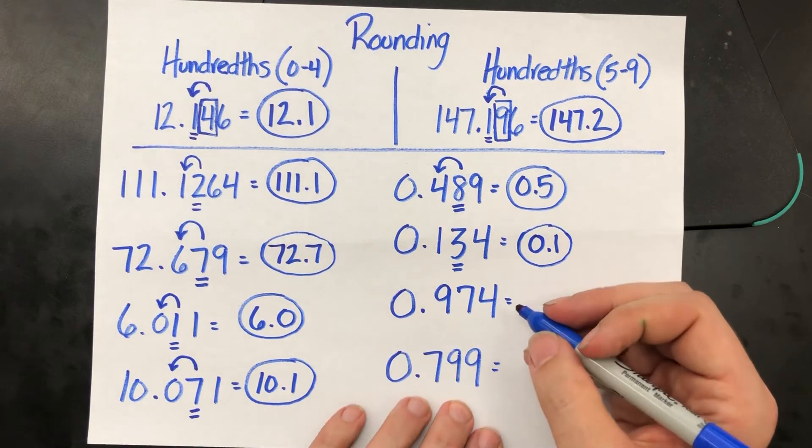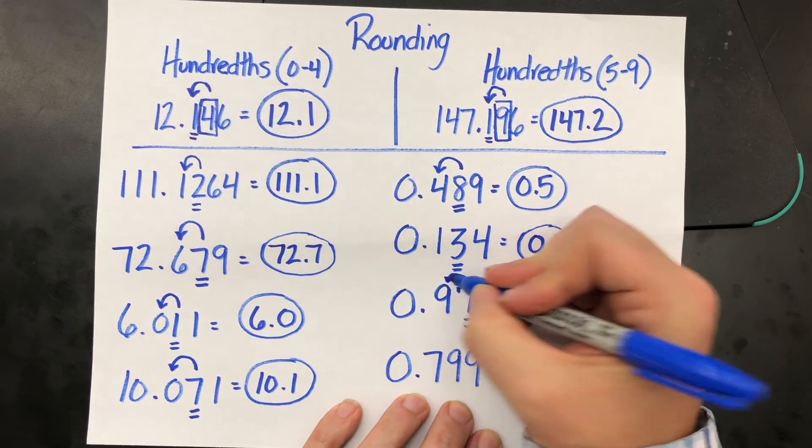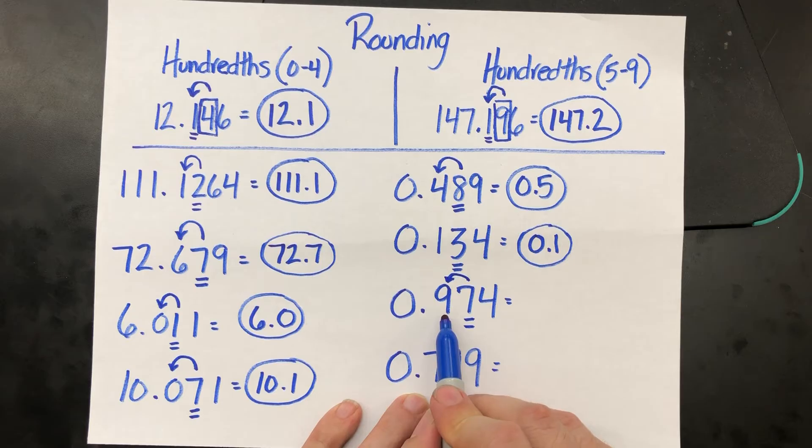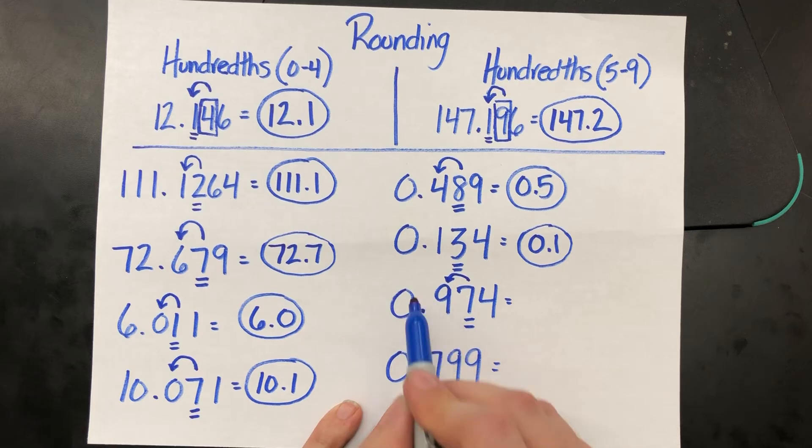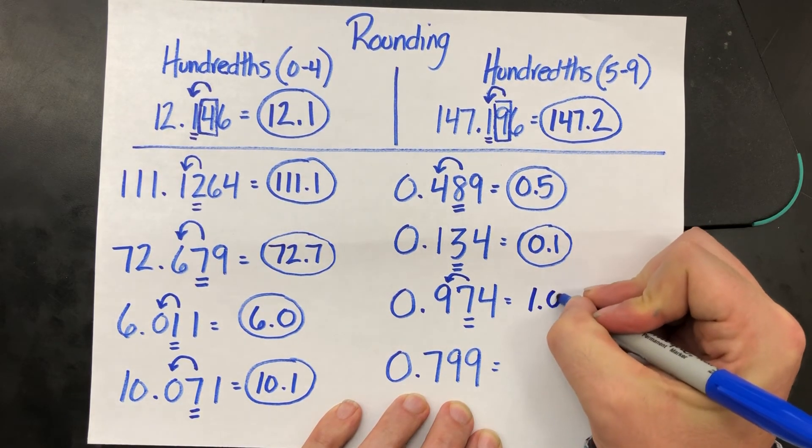Zero point nine seven four. That seven will bump that nine up to a ten. But what happens is you can't put a double-digit number into a single decimal place. So the zero stays where the nine is and the one jumps over to where the zero is. So zero point nine seven four actually gets rounded up to one point zero.